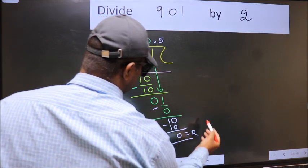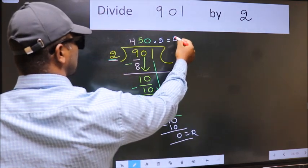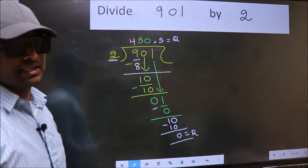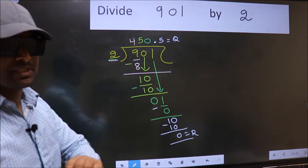This is our remainder. And this is our quotient. Did you understand where does the mistake happen? You should not do that mistake.